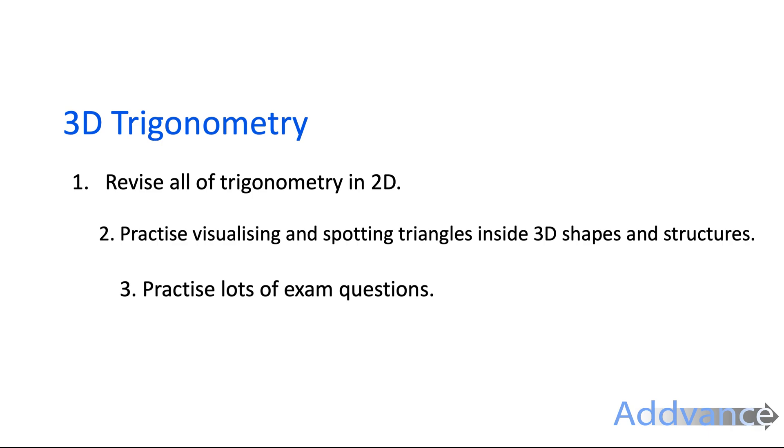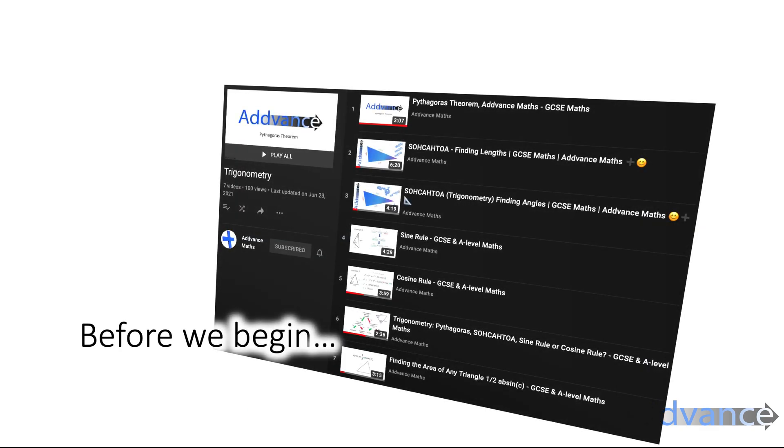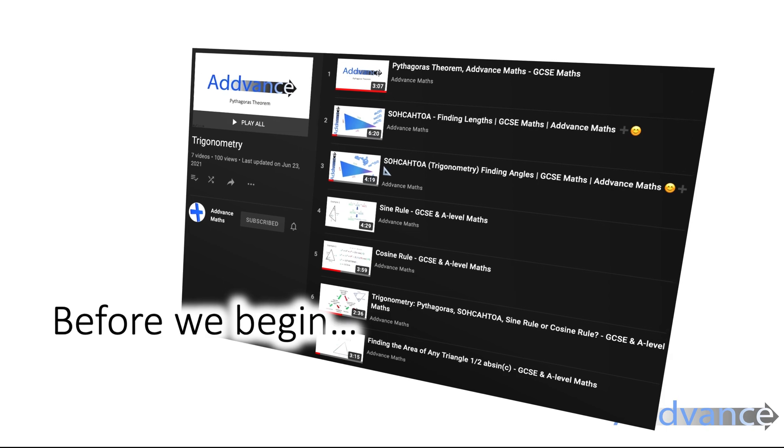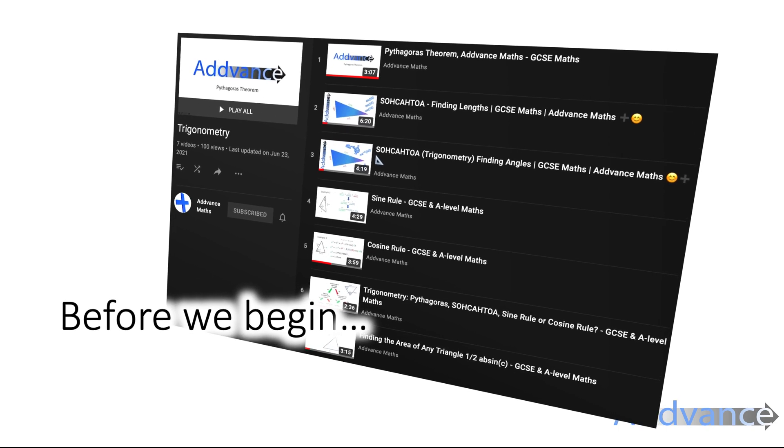And then you have to practice visualizing and spotting triangles in 3D shapes and structures. And then finally, as with every topic, practice lots of exam questions so you really understand what's likely to come up on the exam. Now if you need a bit of practice with 2D trigonometry, I really think you should watch my video on my playlist on trigonometry, which does cover everything from Pythagoras all the way down to cosine rule.